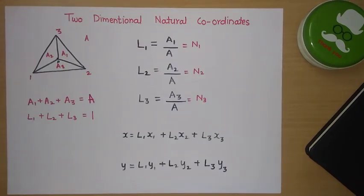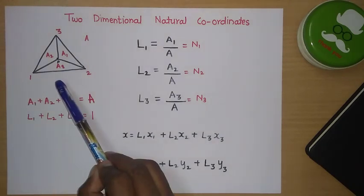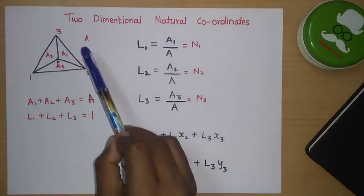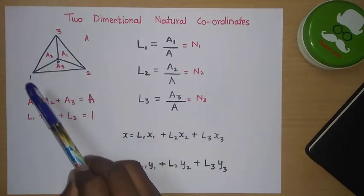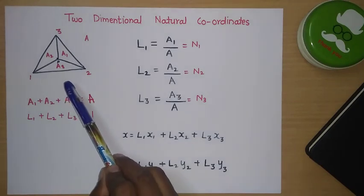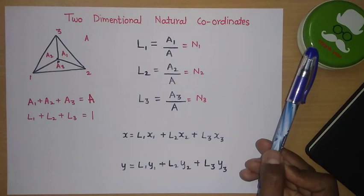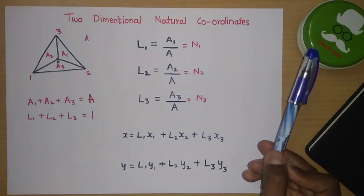Similarly, we will see the natural coordinate for a two dimensional element. In two dimensional elements, the triangular element is mostly used. This is a triangular element having node 1, 2, and 3, with node numbers given in an anti-clockwise direction. For more about this triangular element, click the eye button here to get information about it.